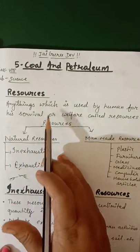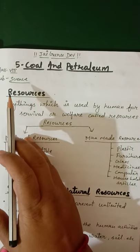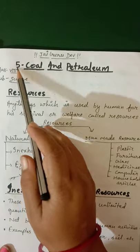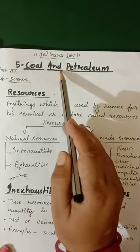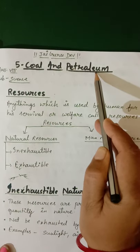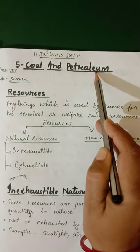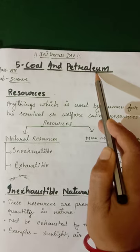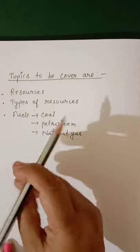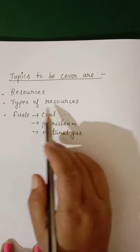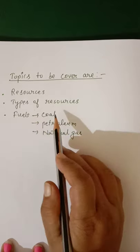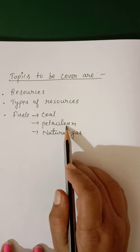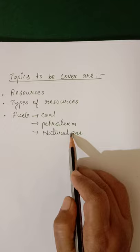Jai Gurudev students, today I am going to teach you 8th Standard Science, Chapter 5, Coal and Petroleum. In this chapter, we will cover the topics: resources, types of resources, and fuels like coal, petroleum and natural gas.